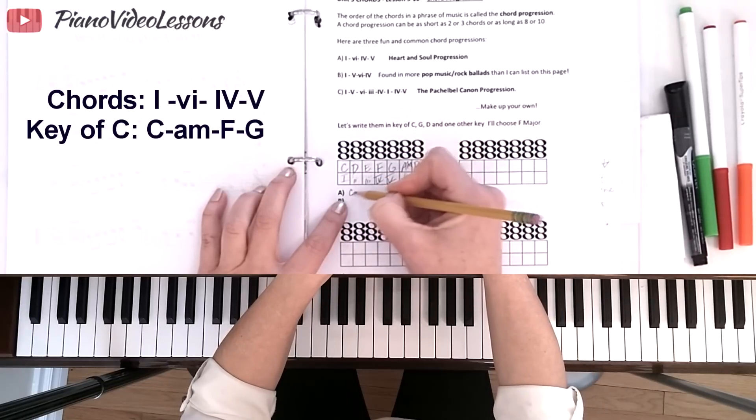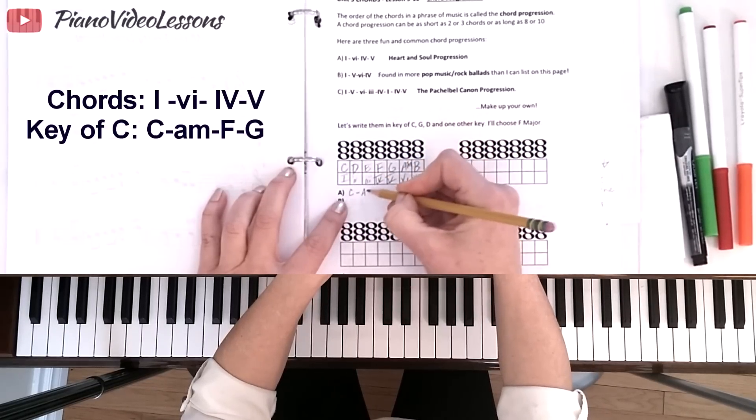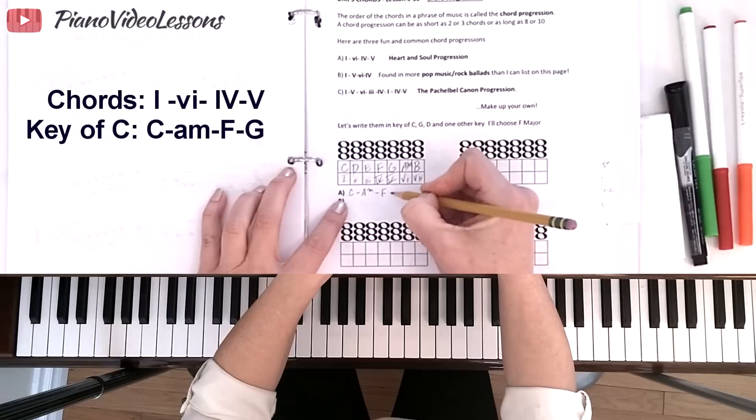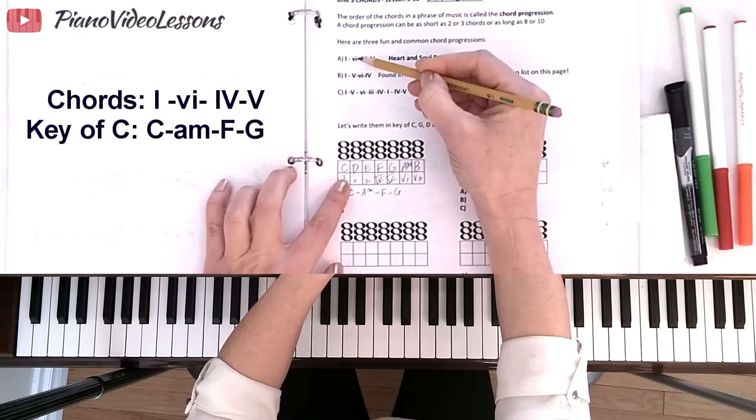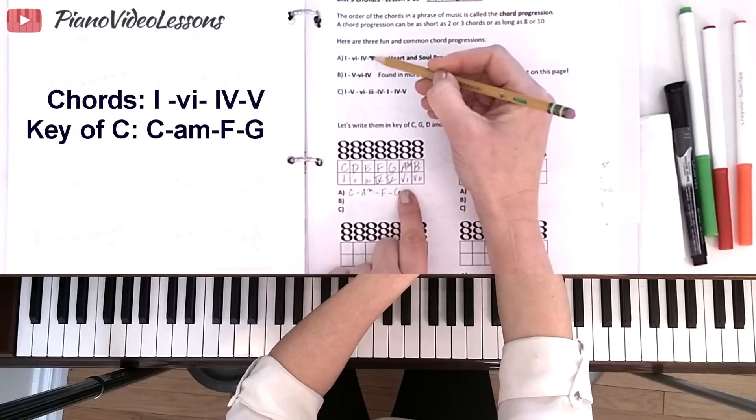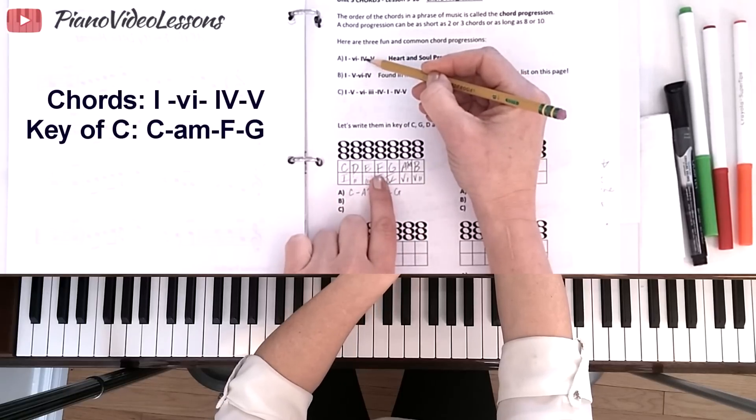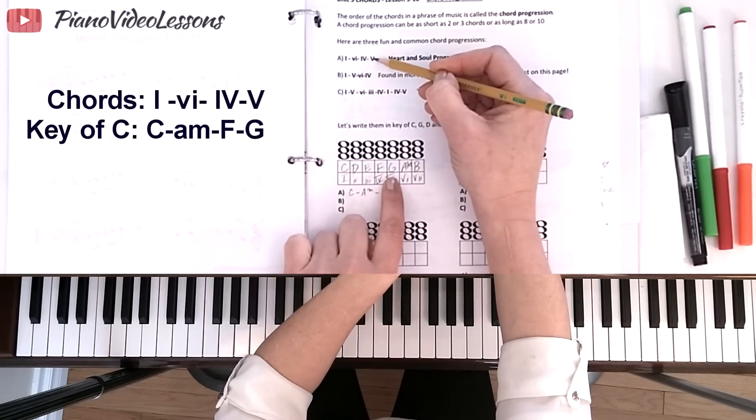We're playing the C chord to the 6 chord, which is A minor, to the 4 chord, F major, to the 5 chord, G major. The 1 chord is the C chord, the 6 chord is the A minor chord, the 4 chord is the F major chord, and the 5 chord is the G major chord.